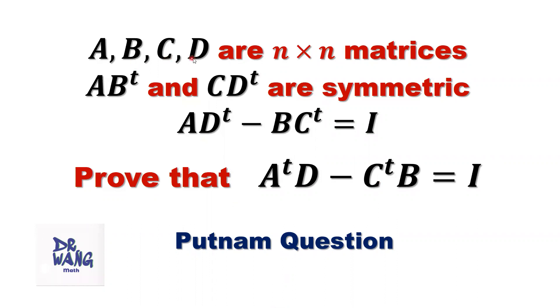A, B, C, D are n by n matrices. A times B transpose and C times D transpose are symmetric. A times D transpose minus B times C transpose equals I. I here means identity, or we call it unit matrix.